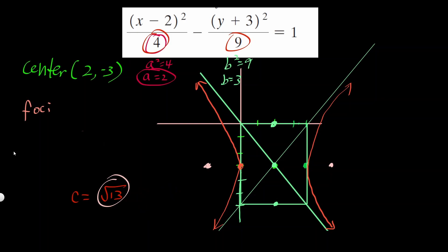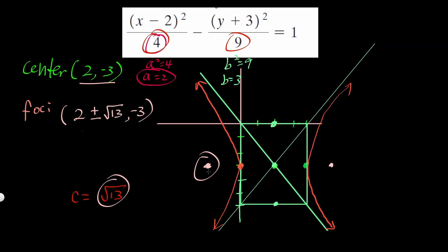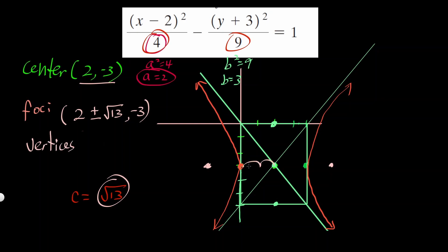I need to go about 3 units and a little bit further in each direction to mark the foci. Our c is radical 13 from the center. Let's label all the points. The center is already labeled at (2, negative 3). Going right and left square root of 13 from the center, the foci are at (2 minus square root of 13, negative 3) and (2 plus square root of 13, negative 3). The vertices are 2 units away from the center, so they are at (0, negative 3) and (4, negative 3).